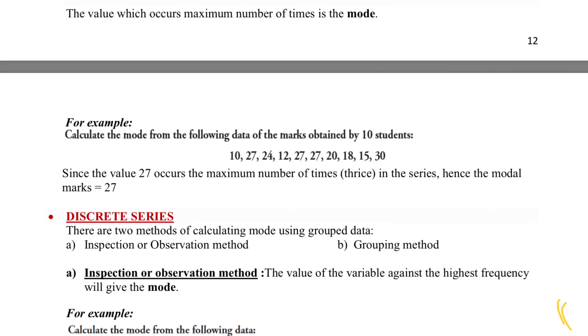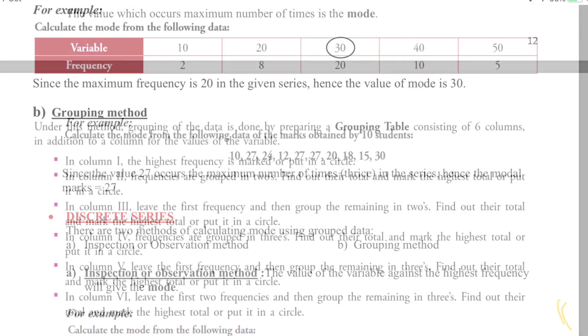In the discrete series, mode is calculated by: a) inspection or observation method, b) grouping method. In the inspection or observation method, the value of the variable against the highest frequency will give the mode. For example, calculate the mode for the following data.